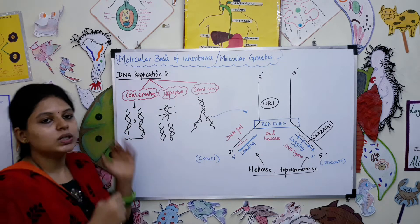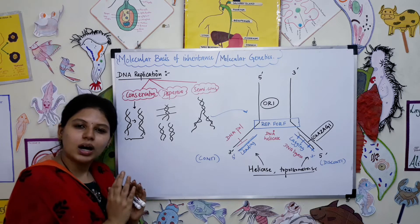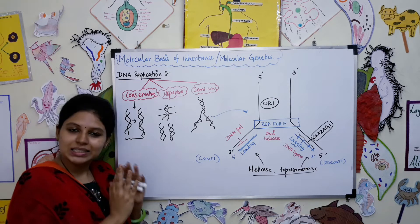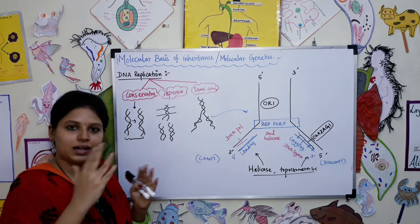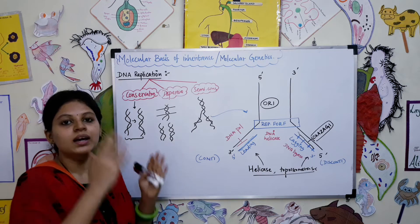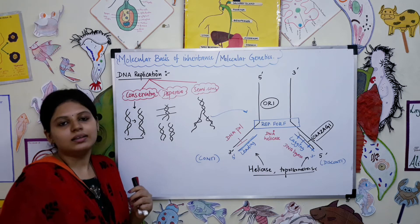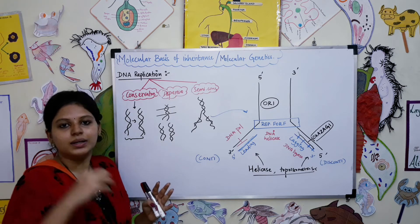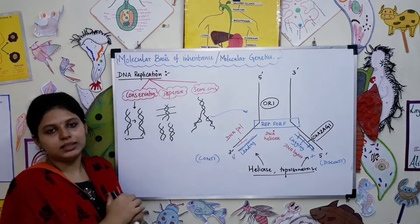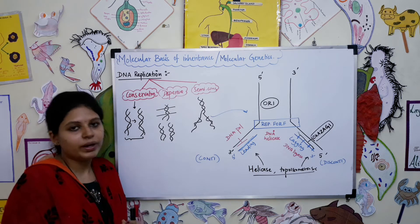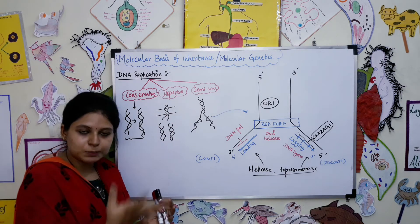First, conservative replication. As the English word suggests, it is conserved and restricted, meaning a single DNA molecule will give rise to another DNA molecule in a conserved, smooth manner. So that is called conservative replication.